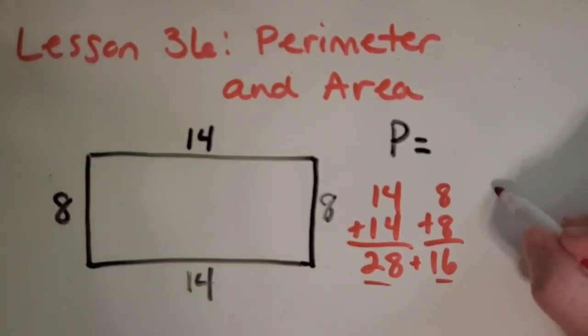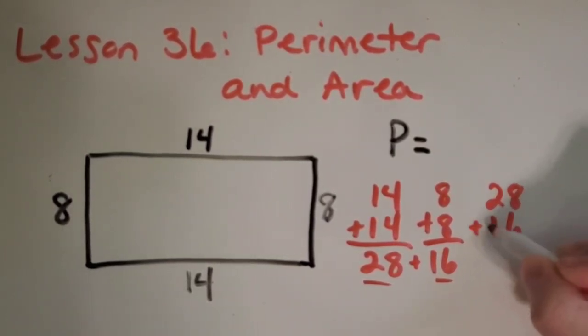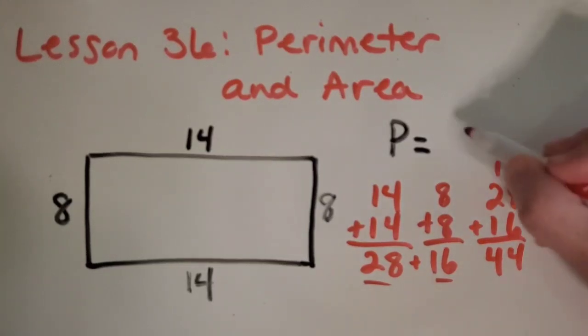I will do that over here so I have space. 28 plus 16. 8 plus 6 is 14. And then there's 4. So the perimeter is 44 blocks long.